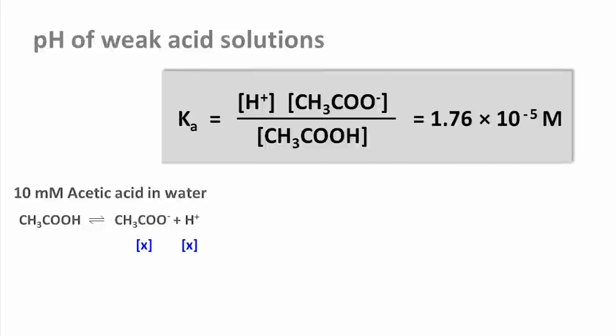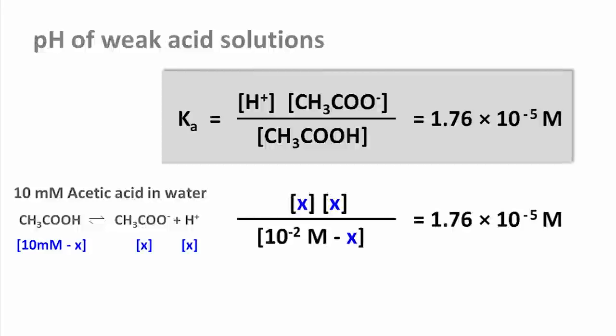To find out how much undissociated acid there is, we have to subtract this value x from the total concentration of 10 millimolar. This means now that we can insert all these values into the equation above. What we get is a quadratic equation with just one variable, and that can be solved. The result is just over 4 times 10 to the minus 4 moles per liter of protons, which equals a pH of 3.4.